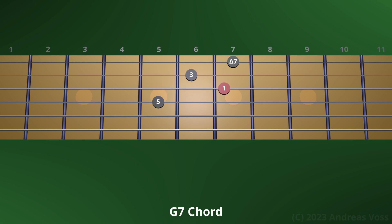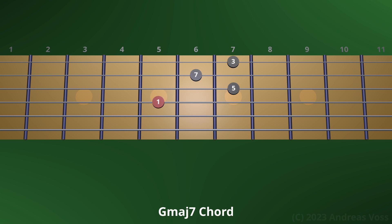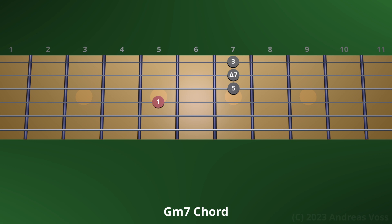Back to the dominant 7th chord. Next, let's construct the major 7th chord from the dominant 7th chord — we do this by raising the 7th to the major 7th. This voicing sounds much nicer than the weird one on the 3rd fret. Finally, let's construct the minor 7 flat 5 chord. Going back to the minor 7th chord, we lower the 5th to the flat 5.